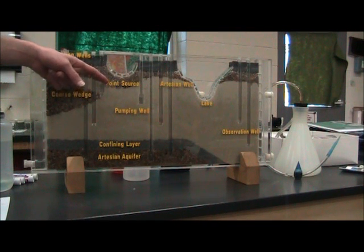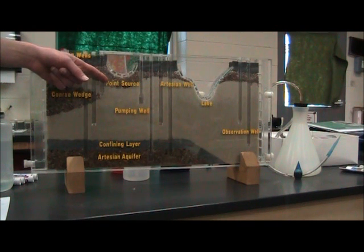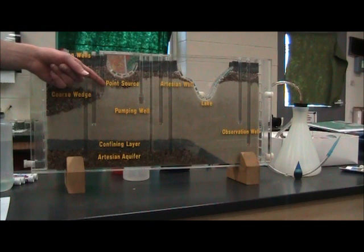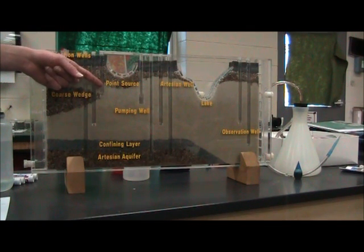Point source pollution could be an example of an underground gas tank or a leaky factory or something like that that we can point to and say this chemical came from this source.